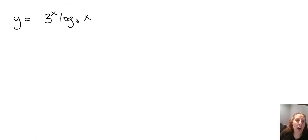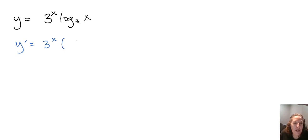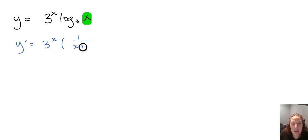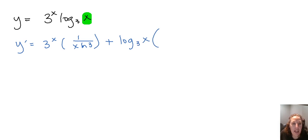All right, now let's look at y equals 3 to the x times log base 3 of x. Again, we have a product rule. Our first is 3 to the x, then the derivative of log base 3 of x. That's going to be 1 over u — in this case u is just x — so we get 1 over x, but since our logarithm is not base e, we multiply by the natural log of the base in the denominator, plus the second, log base 3 of x, times the derivative of 3 to the x, which is 3 to the x.